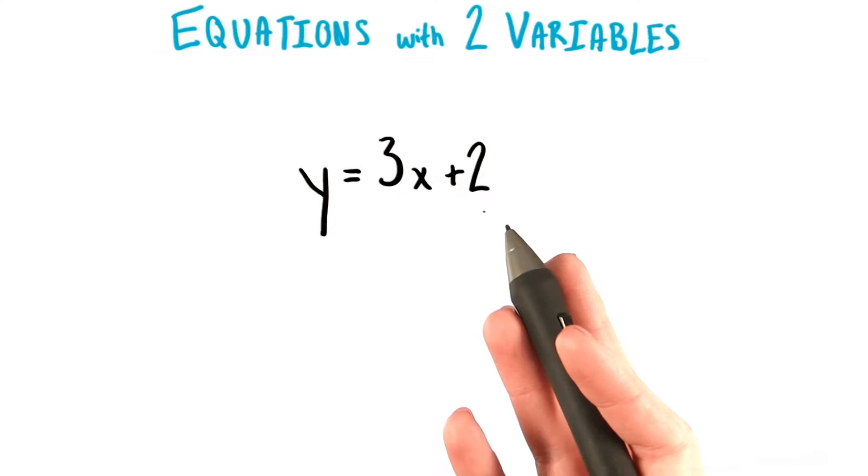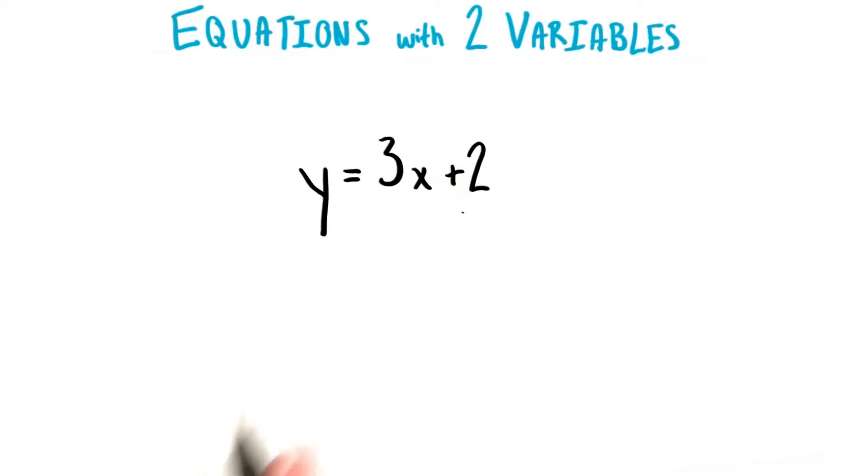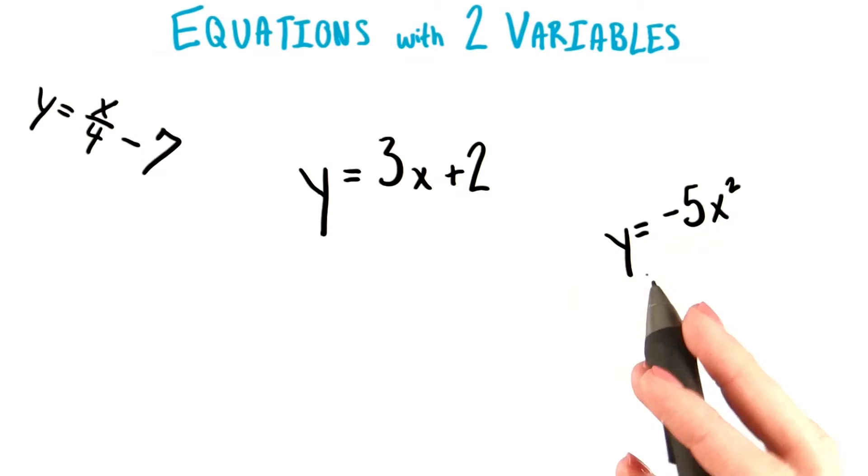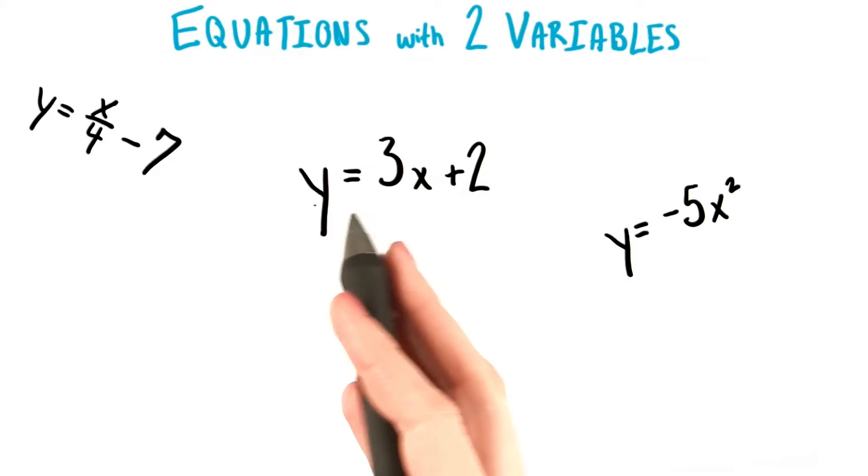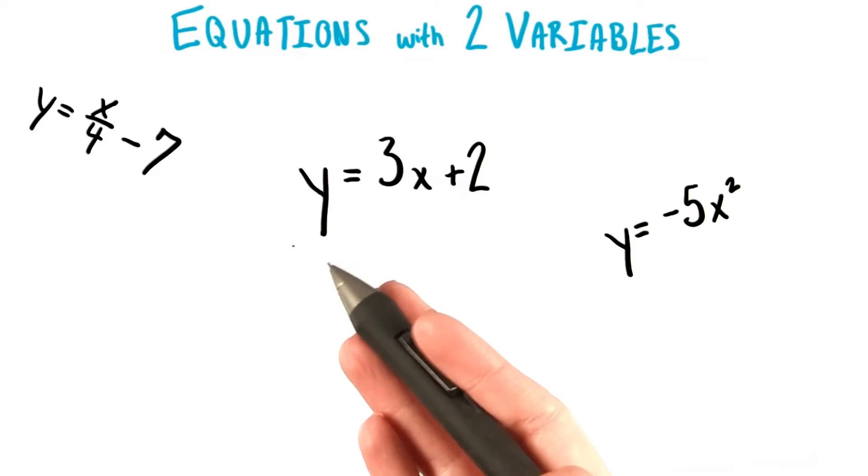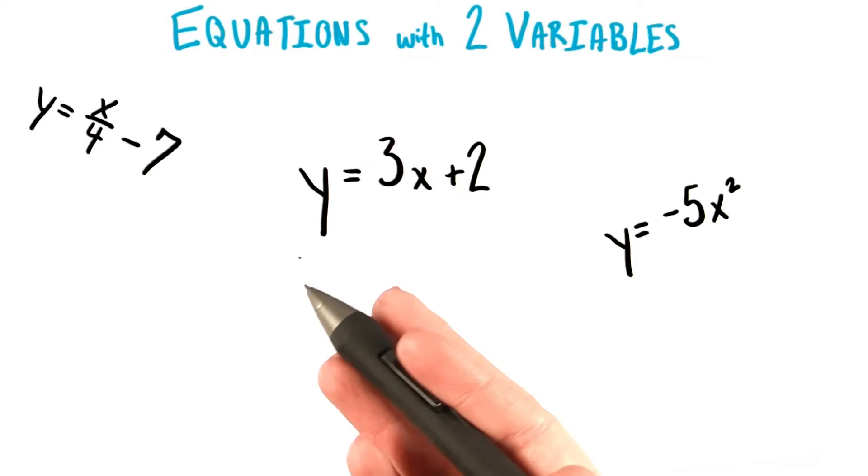Now, just like in this equation right here, a lot of the other equations we've seen at different parts of the class have been written in the same form as y equals some sort of expression involving x. We saw that we could write quadratics in this form, too. And there were a lot of situations in which isolating y by itself on one side was really convenient for solving for different quantities.